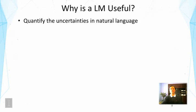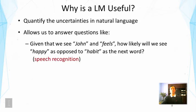Why is such a model useful? It's mainly because it can quantify the uncertainties in natural language. One source of uncertainty is the ambiguity in natural language discussed earlier. Another source is because we don't have complete understanding — we lack all the knowledge to understand language fully, which also creates uncertainties. Let me show some examples of questions we can answer with a language model.